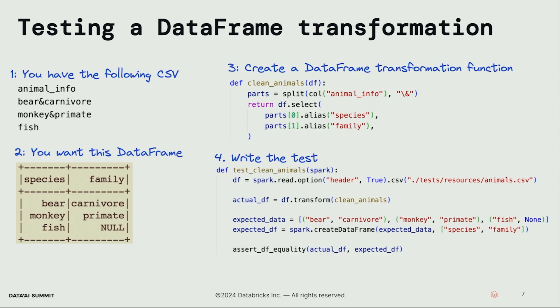Let's see how we can unit test this. We read in that CSV file into a DataFrame, then compute the actual DataFrame by invoking the clean_animals function using the transform argument. With Spark, it's really nice to compose DataFrame transformations with the built-in transform function. Then we construct our expected results and use the Chispa assertDF equality function to verify that the actual DataFrame is equivalent to the expected DataFrame. Note that this test involves file system IO — we have that animal CSV stored in our code repository. Later, we'll see how to write a similar test that doesn't involve any file system IO.